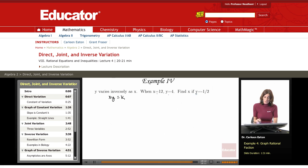So let's go about this by finding k. I know that these values satisfy this equation. So 12 times 4 equals k. Therefore, k equals 48.